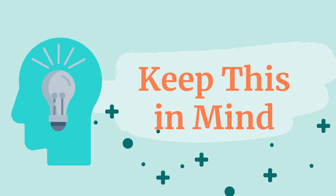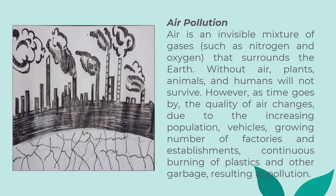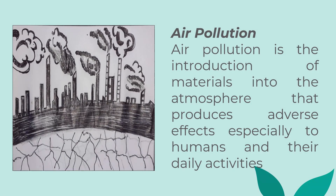Keep this in mind. Here are some of the effects of the changes in the abiotic factors of an ecosystem. First, Air Pollution. Air is an invisible mixture of gases such as nitrogen and oxygen that surrounds the Earth. Without air, plants, animals, and humans will not survive. However, as time goes by, the quality of air changes due to the increasing population, vehicles, growing number of factories and establishments, continuous burning of plastics, and other garbage, resulting in pollution. Air pollution is the introduction of materials into the atmosphere that produces adverse effects, especially to humans and their daily activities.